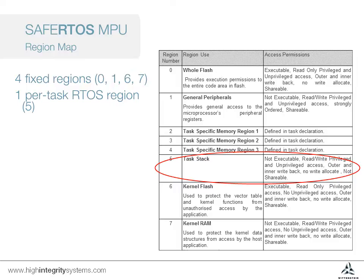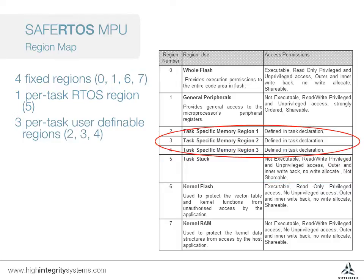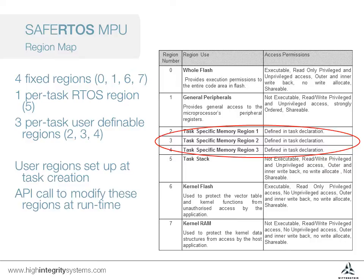It may also be desirable to limit a task's access to the peripherals, so this region can be overridden. We're left with three user-configurable regions which, along with the task stack region, are swapped on every context switch. These user-defined regions are initialized within the task creation parameters; however there are API functions which allow them to be modified at runtime too.